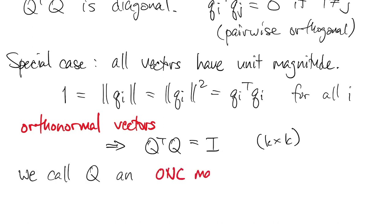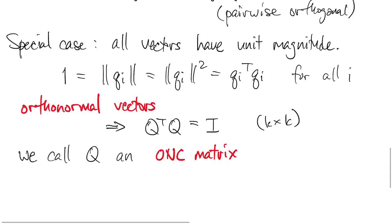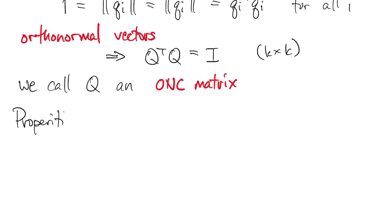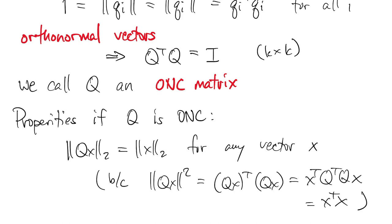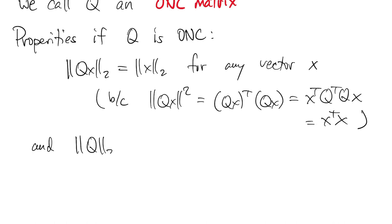Now we call Q an ONC matrix for orthonormal columns. That's not a standard term. It's just one that we thought was convenient for the book. ONC matrices have some useful properties. In addition to Q transpose Q equals I, we have that the 2 norm of Qx is equal to the 2 norm of x for any vector x. That's a simple calculation using the usual connection to inner products. From that, we can show that the 2 norm of this Q matrix must equal 1. That's just a consequence of the definition of norms.